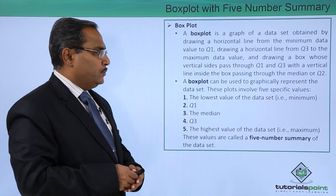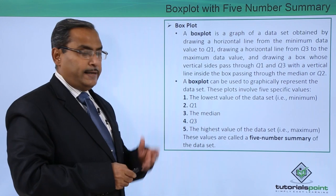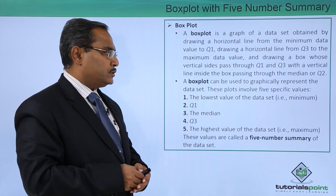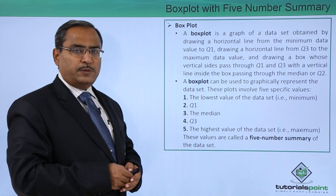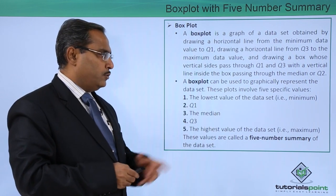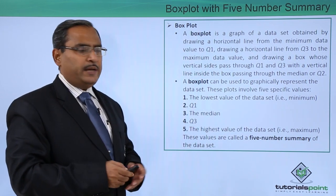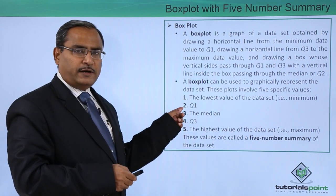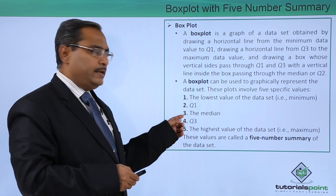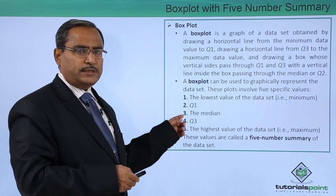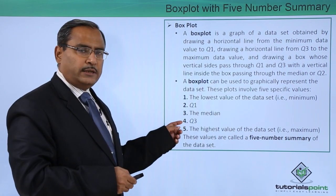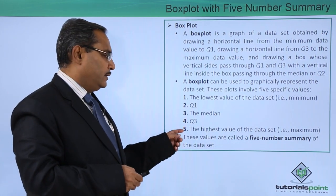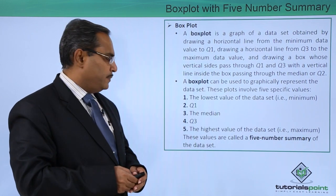A box plot can be used to graphically represent the data set and these plots involve 5 specific values. The first one is the lowest value of the data set, that is the minimum, then the first quartile Q1, then the median also called Q2 or second quartile, then the third quartile Q3, and the highest value of the data set, that is the maximum.